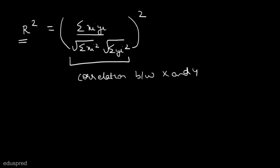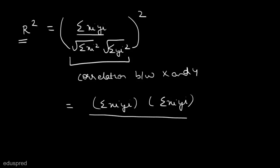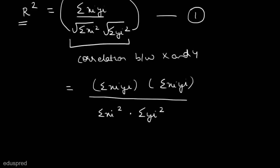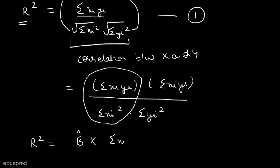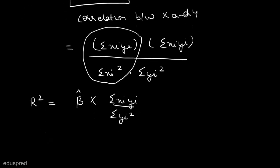Now let's manipulate this formula. Squaring R-squared gives summation(xi*yi) * summation(xi*yi) divided by summation(xi²) * summation(yi²). From this equation, we can identify that one portion is beta hat, so R-squared equals beta hat multiplied by summation(xi*yi) divided by summation(yi²). This is the relationship between R-squared and beta hat. Since beta hat = 0, this implies R-squared is also equal to zero.